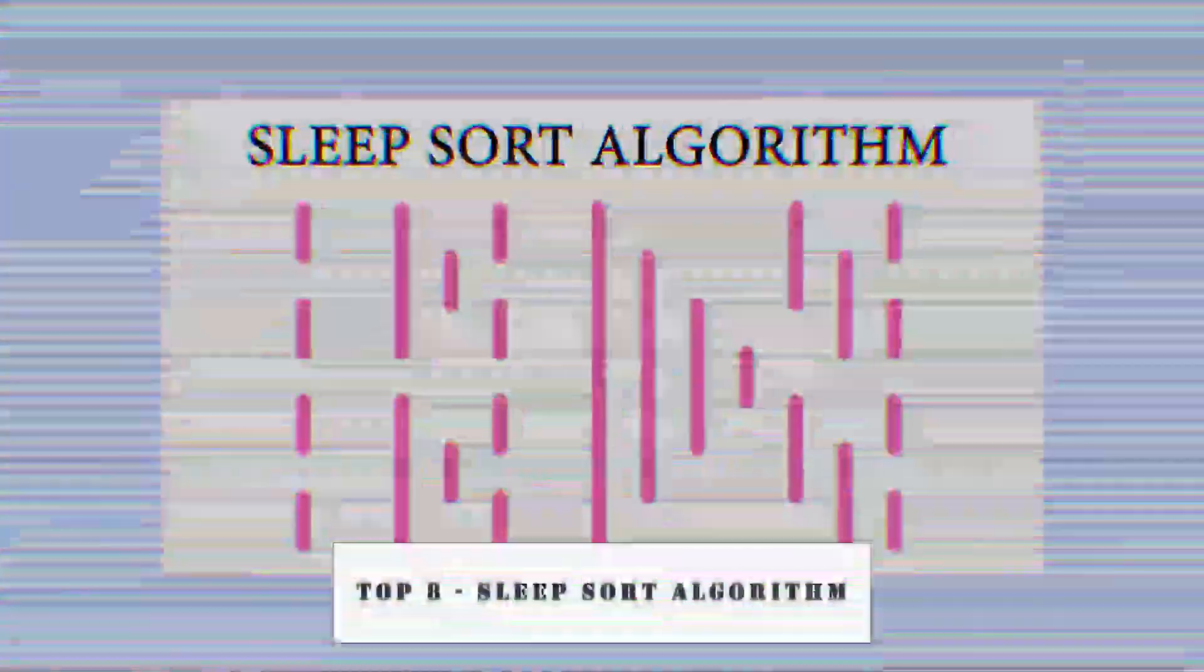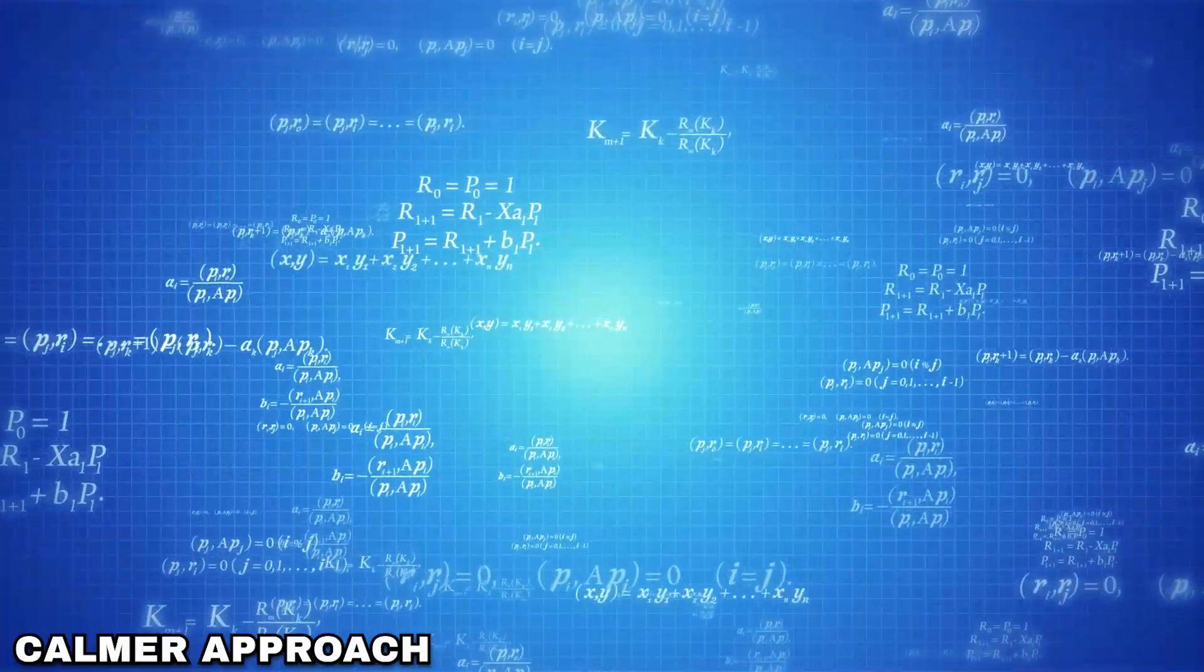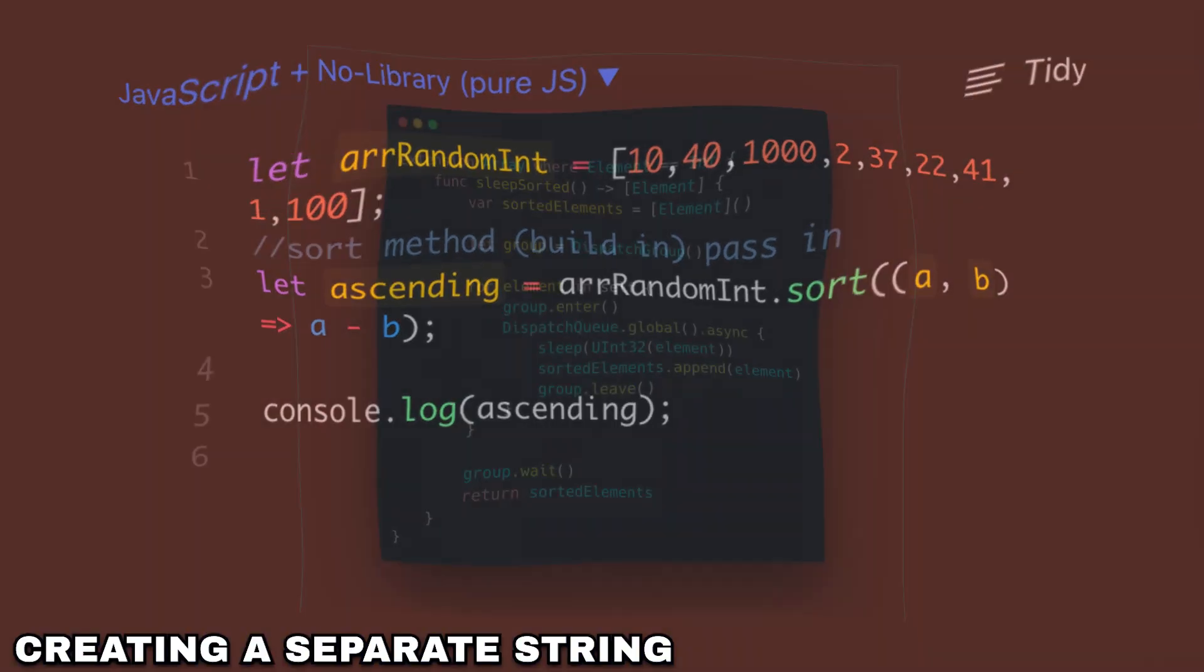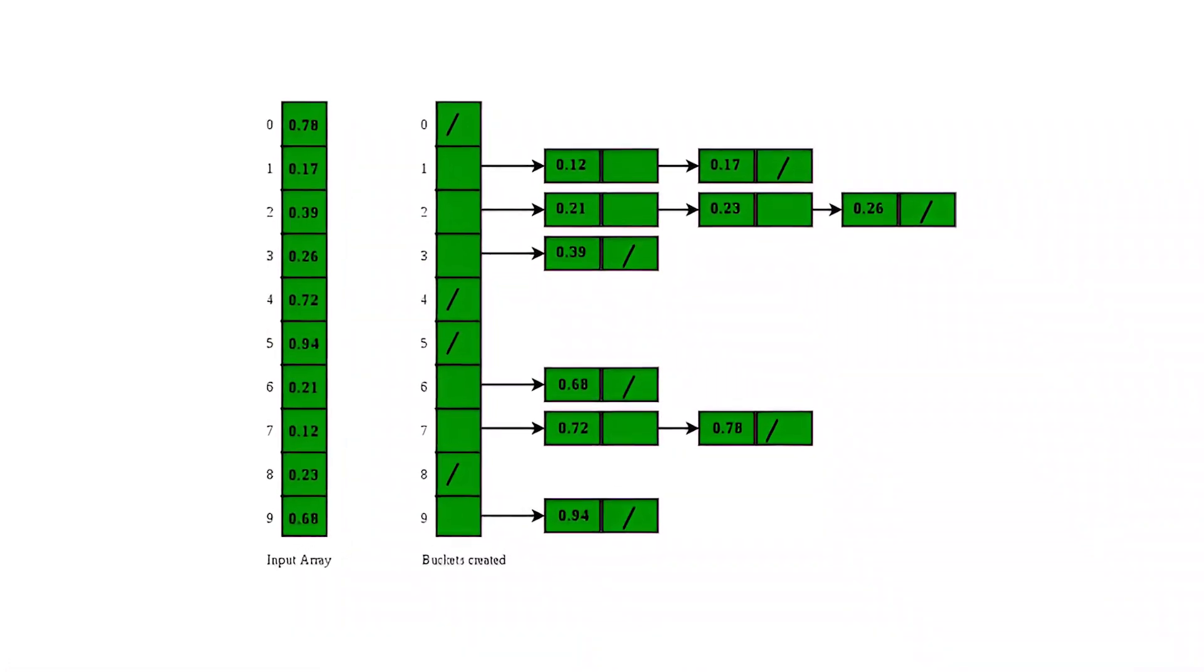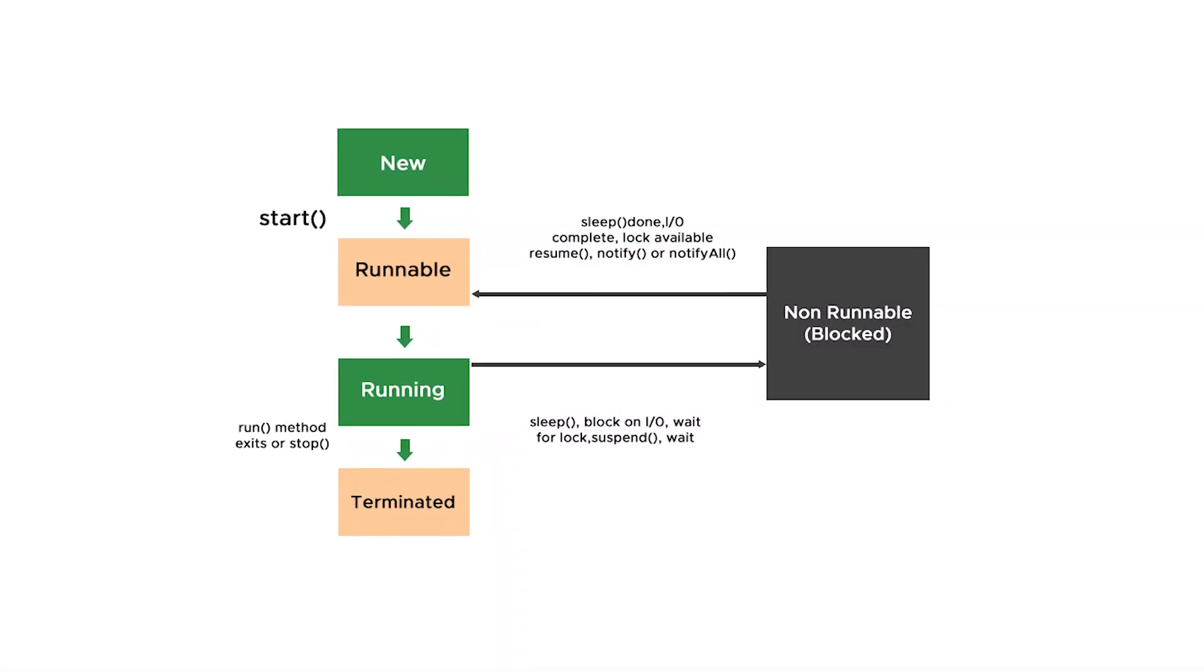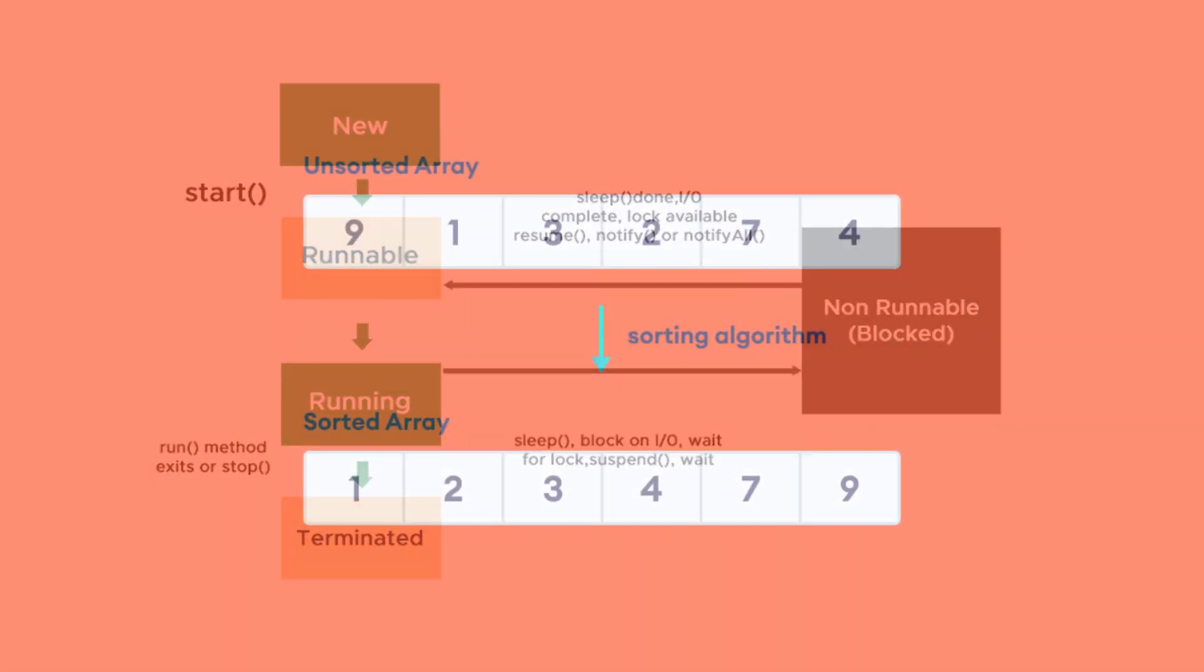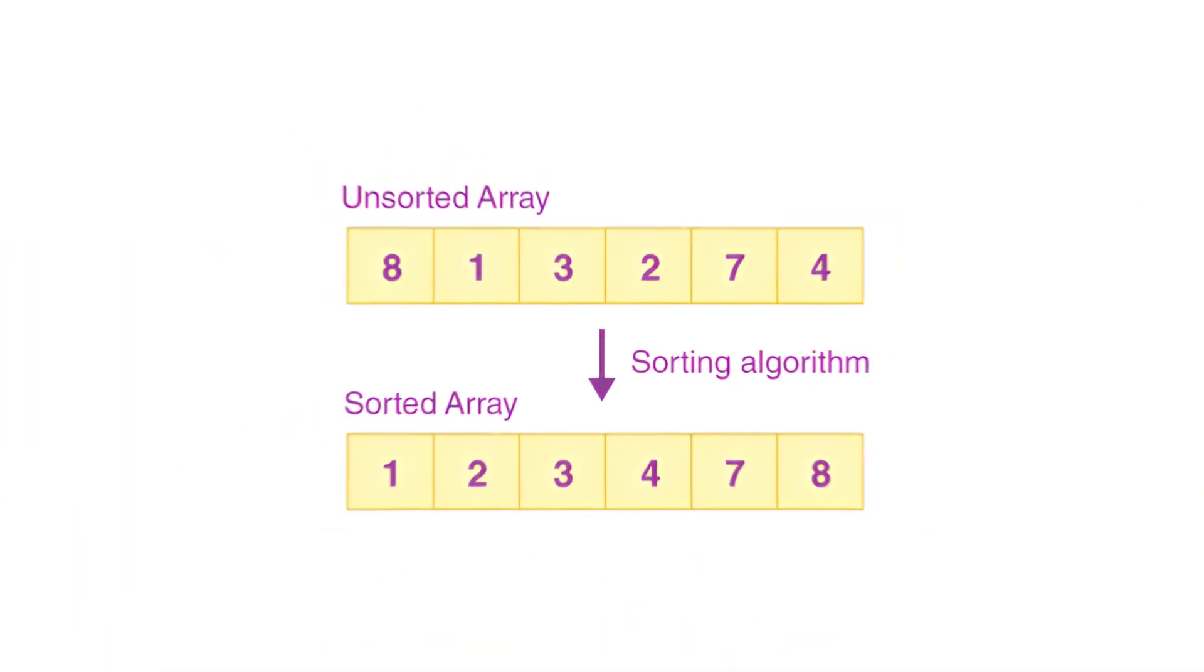Top 8. Sleep Sort Algorithm. Instead of relying on complex comparisons and mathematical operations, this embraces a calmer approach. Sleep Sort Algorithm is a sorting algorithm that works by creating a separate thread for each element of the input array. Each thread sleeps for a period of time proportional to the value of the element it represents. When a thread wakes up, it adds its associated element to the output array. This sorting method will always sort the thread with the shortest sleep time first, waking up first and printing the number.